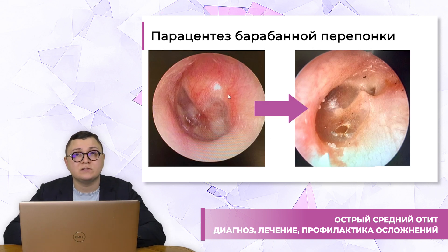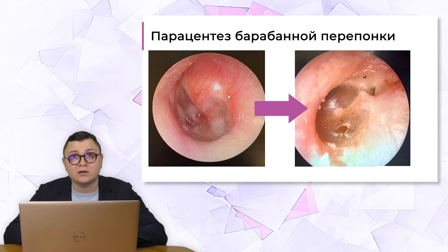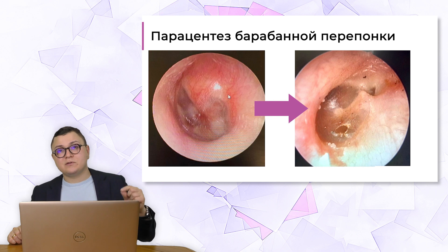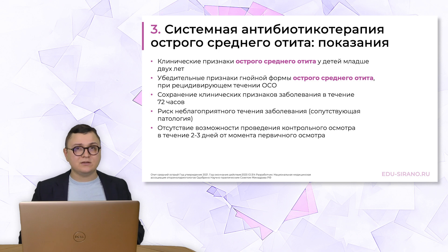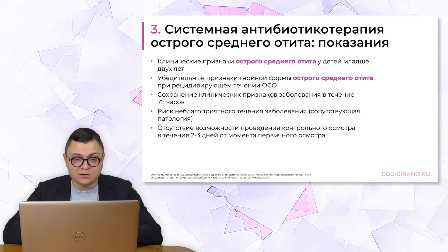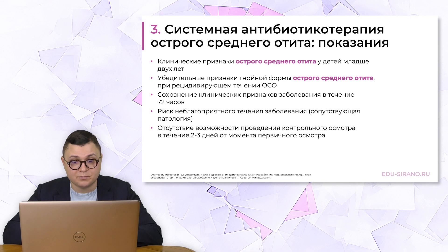При явлении острого среднего отита у пациента через 3 дня после выполнения парацинтеза мы видим значительное снижение воспаления, гиперемии перепонки и очищение барабанной полости – на фоне системных антибиотиков и разгрузочной терапии в нос. Если возникла перфорация перепонки, использовать комбинацию лидокаина и феназона в виде ушных капель уже неправильно: в таком случае заменяем капли на содержащие антибиотики.